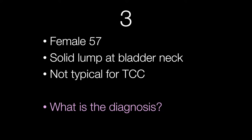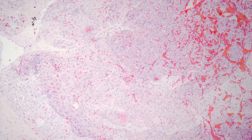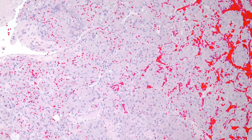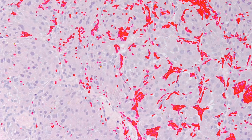Case number three is from a female of 57 with a solid lump at the bladder neck. It does not look typical for a CCC. So what is the diagnosis? Starting off with a low power view, you can see the abnormality on the right side of the picture — there's a bit of a clue for you. Here are some higher power views.